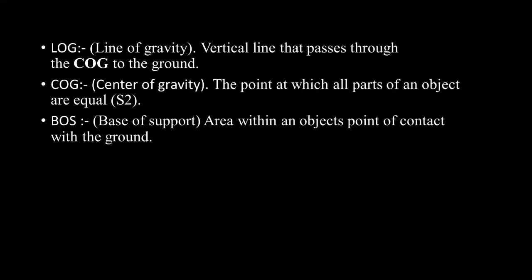Before going deeper into posture, let me give you the biomechanics of posture — how posture is maintained. Those attending this class — scientific staff and support staff — may already have some idea regarding the line of gravity, center of gravity, and base of support. The line of gravity is a vertical line passing through the body towards the ground. When the line of gravity is in close proximity to the segments of the body, that joint or segment is in a proper posture. Center of gravity is the point where the entire mass of the object is concentrated — in human beings, the center of gravity is very close to the S2 level.